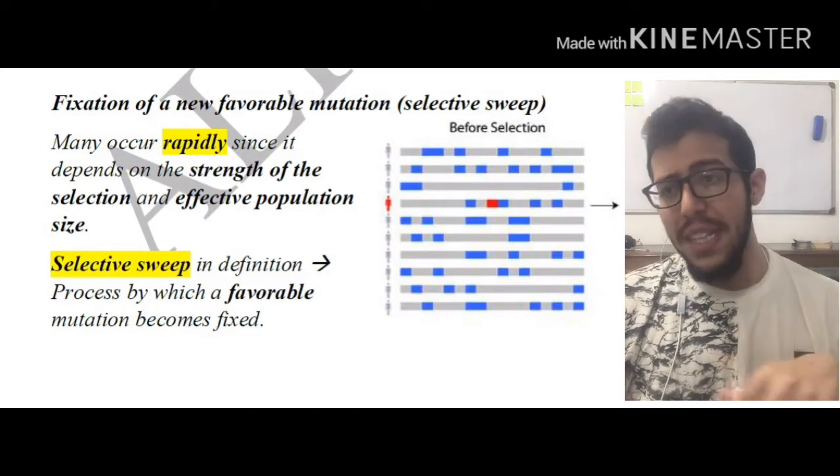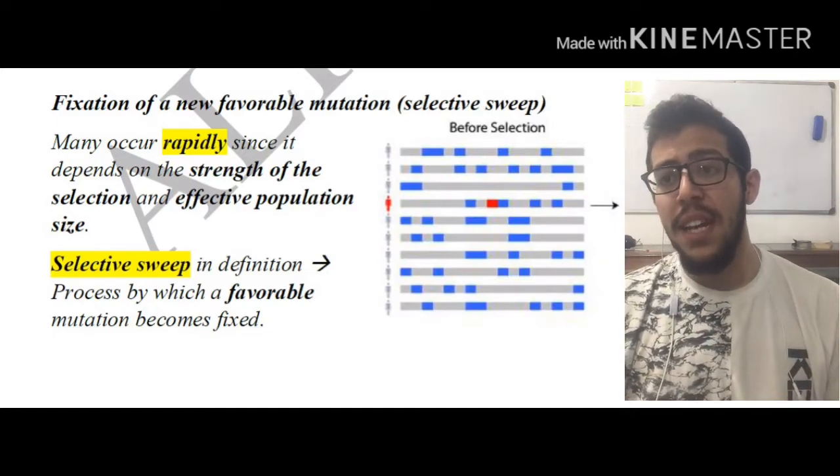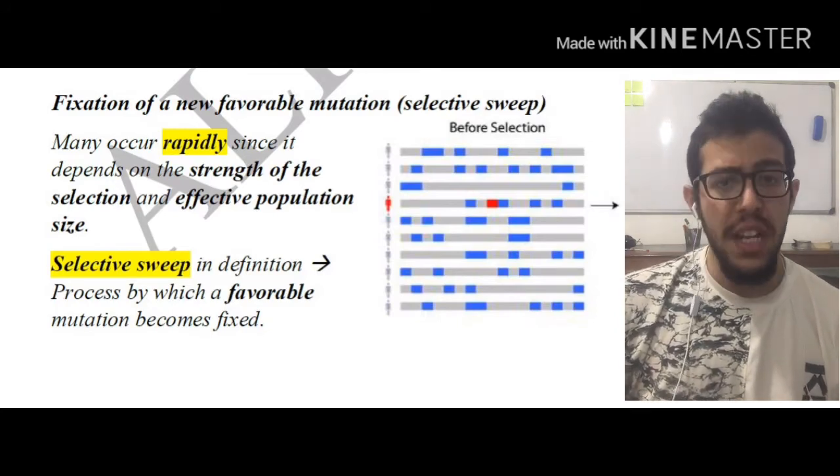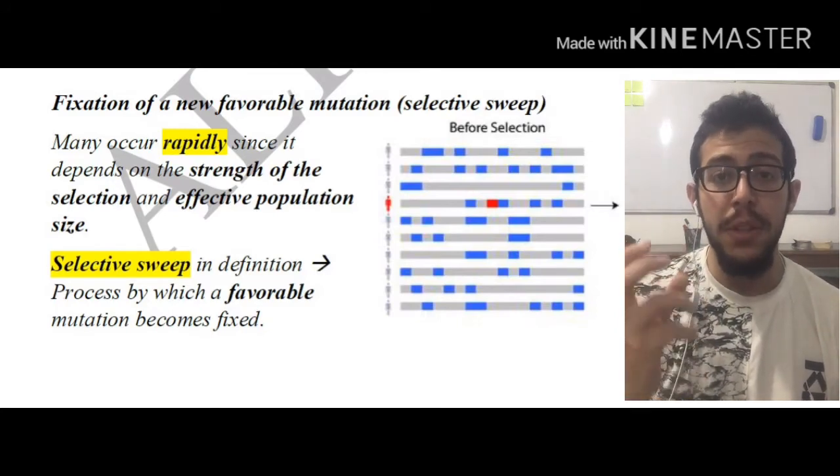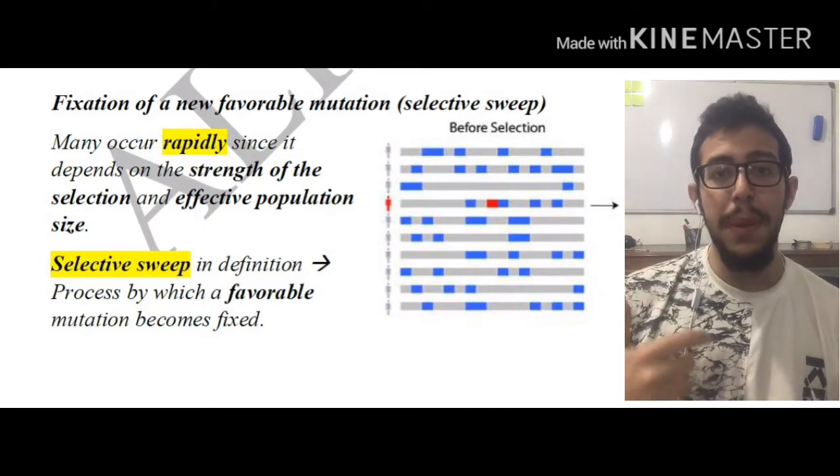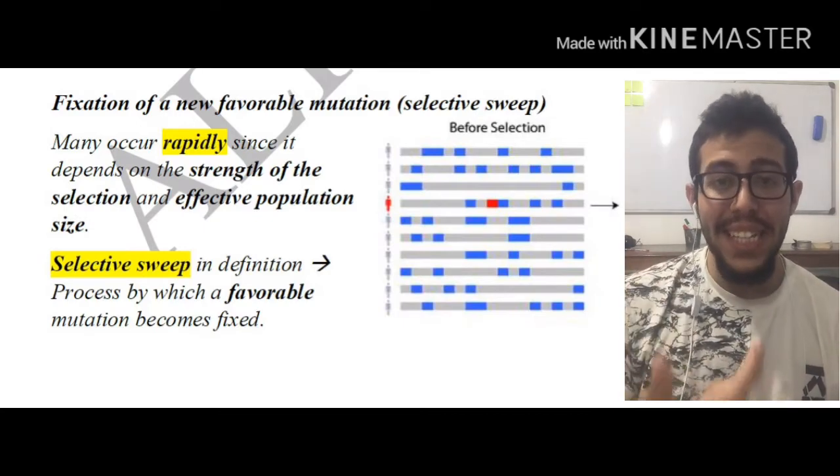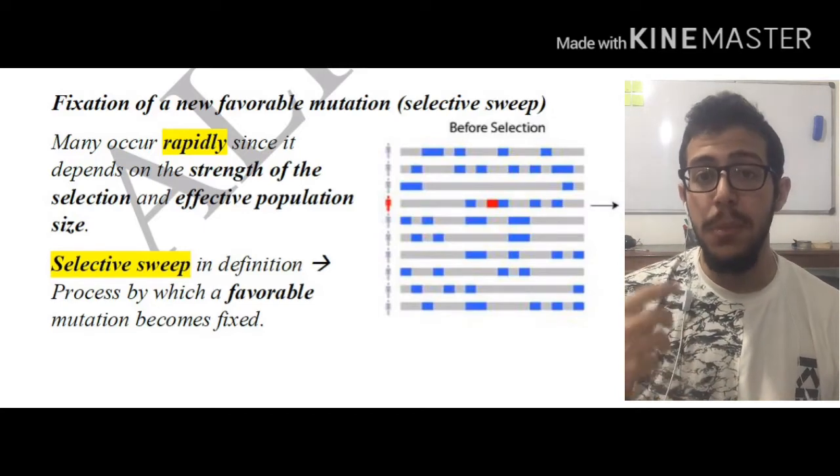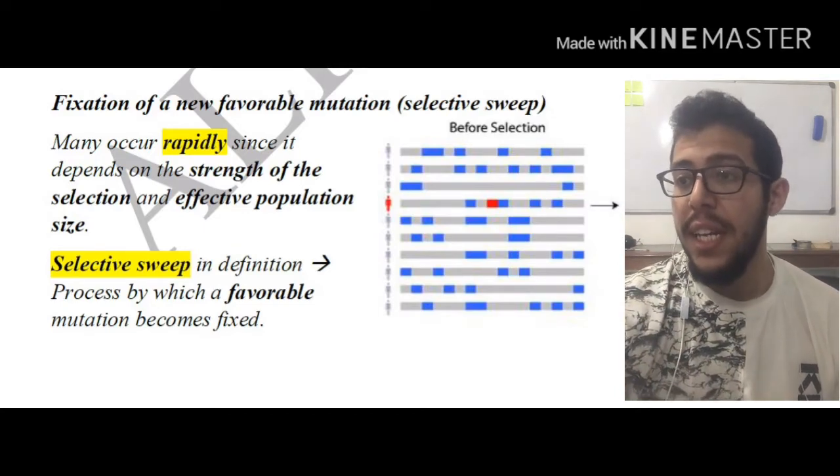Selective sweep by definition is the process by which a favorable mutation becomes fixed. Just like we mentioned before, if a mutation allows or facilitates an organism to survive harsh conditions, then it is going to be definitely favored in selection.